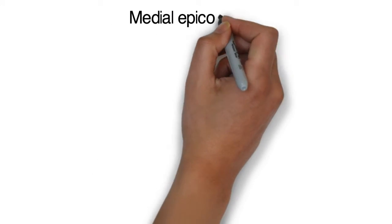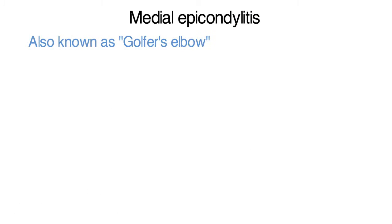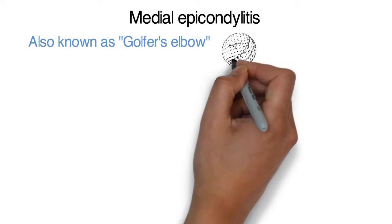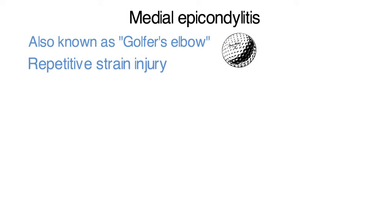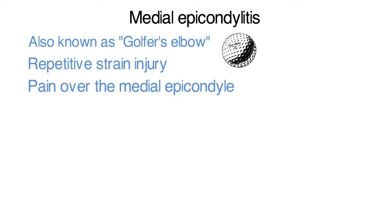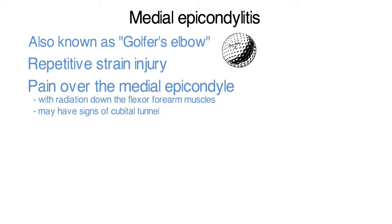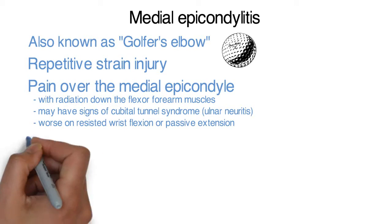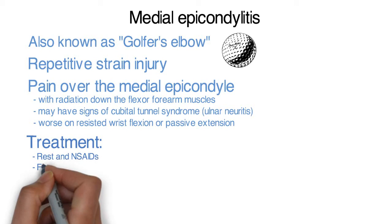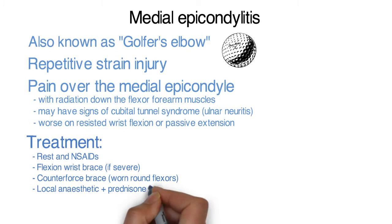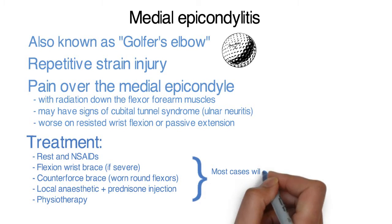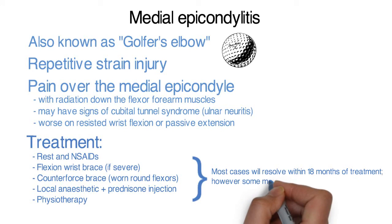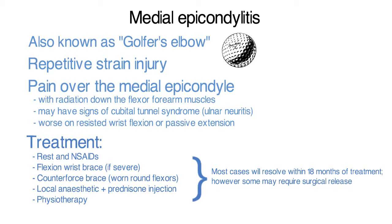Conversely, inflammation of the medial epicondyle is called medial epicondylitis, also known as golfer's elbow. Also a repetitive strain injury, it presents with pain over the medial epicondyle, with radiation down the flexor forearm muscles. It may have signs of cubital tunnel syndrome and is worse on resisted flexion and passive extension. Various conservative and medical treatment options are available, with surgical options reserved for cases failing to respond within 18 months.